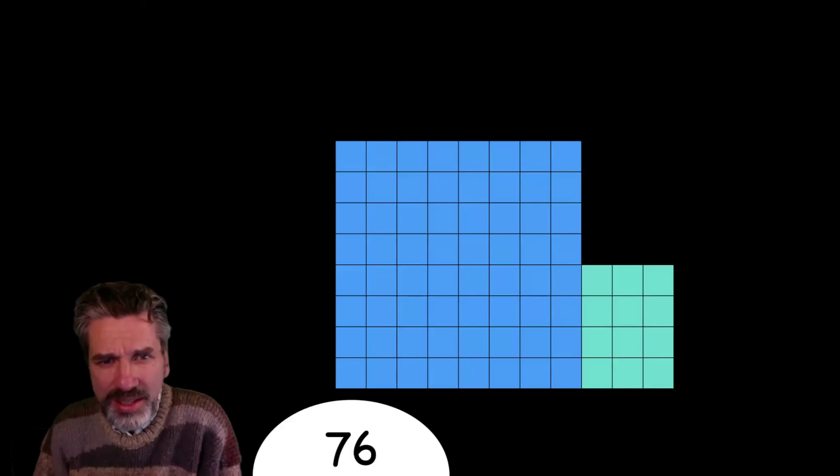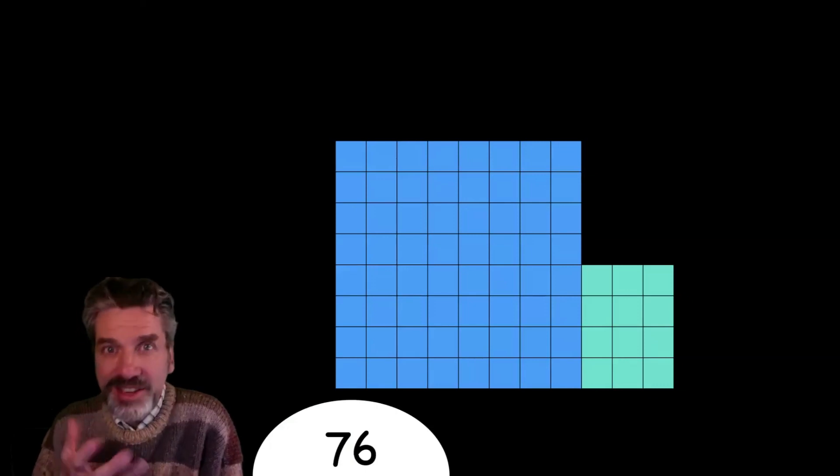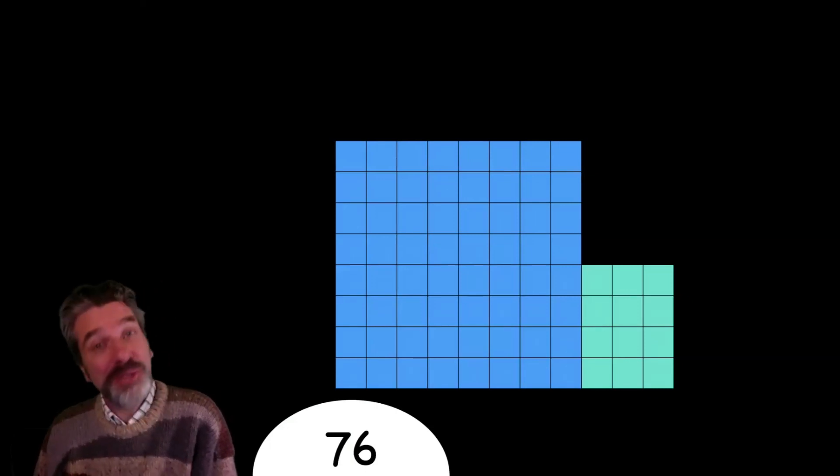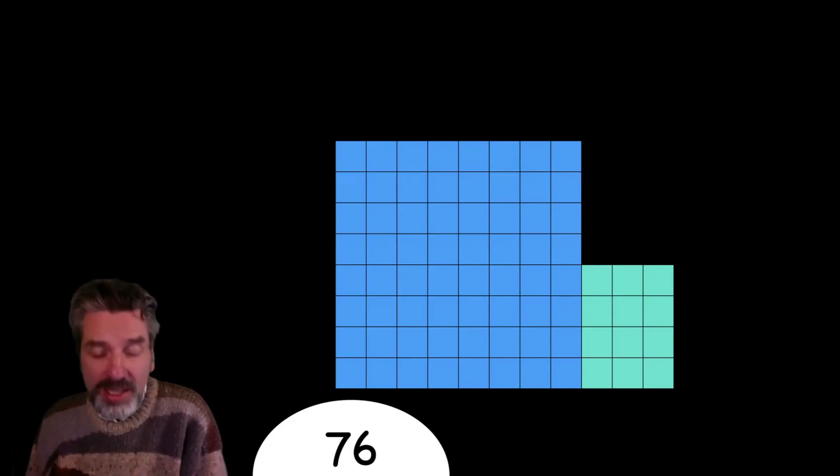So 76. Are there 76 squares here? Yes, there are. So that should have been a hypothesis. It's a basic hypothesis, but it's a hypothesis that your students should have made.